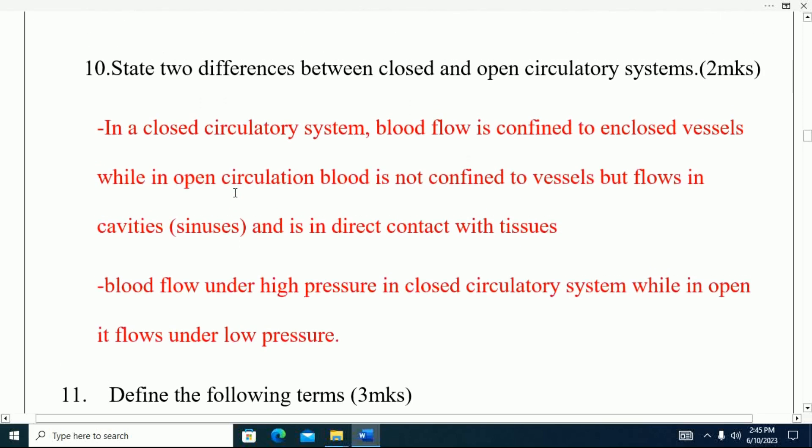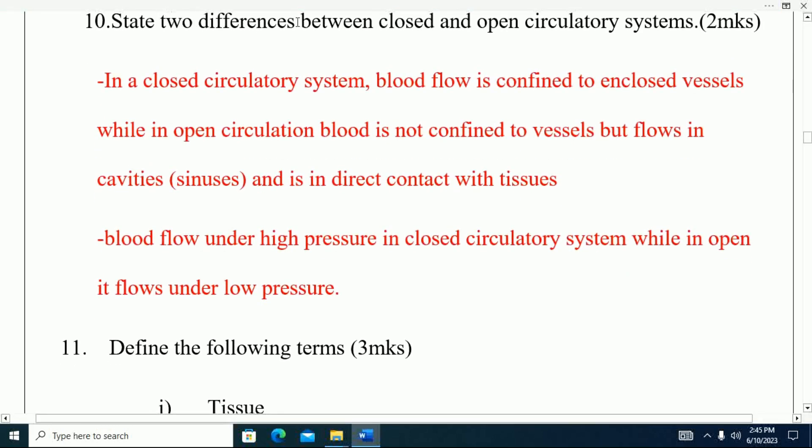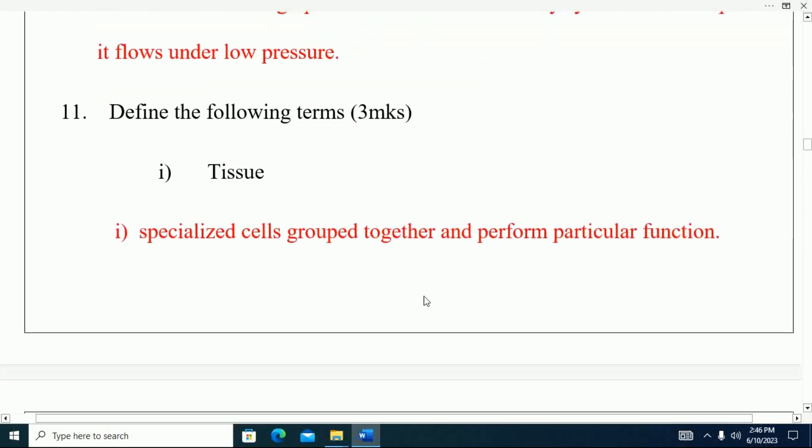Question number ten: State two differences between closed and open circulatory system. In closed circulatory system, blood flows in confined or enclosed vessels, while in open circulatory system blood is not confined to vessels but flows in cavities and is in direct contact with tissues. Blood flows at high pressure in closed circulatory system, while in open it flows under low pressure.